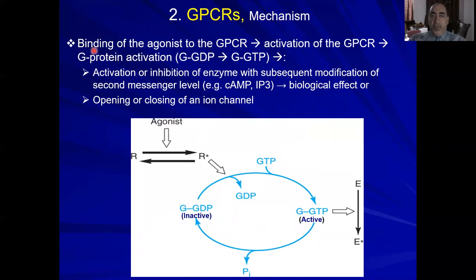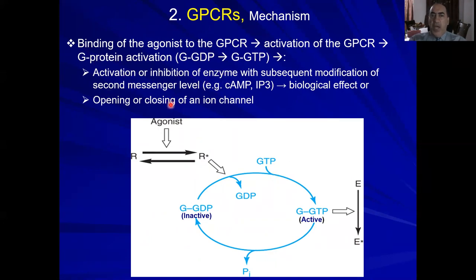The mechanism is as follows: first, the agonist binds to the receptor, converting it from the resting state to the activated state. The activated receptor then activates the G-protein from the GDP status (inactive) to the GTP status (active). This in turn activates the effector — from inactive to active status. The active effector could be an enzyme or an ion channel, as we'll see in the next slide.